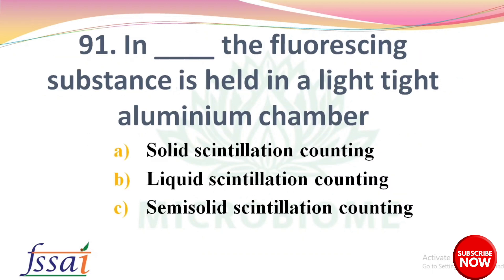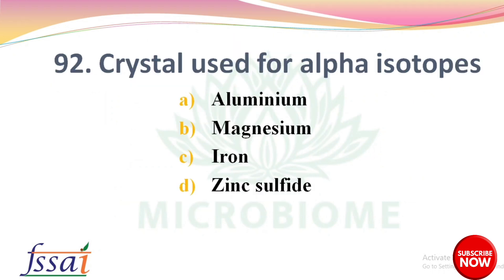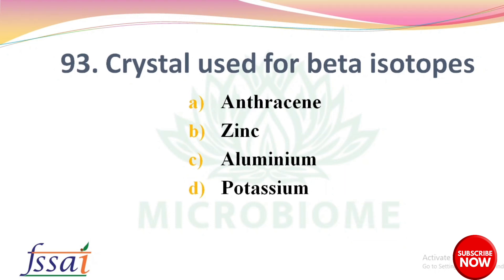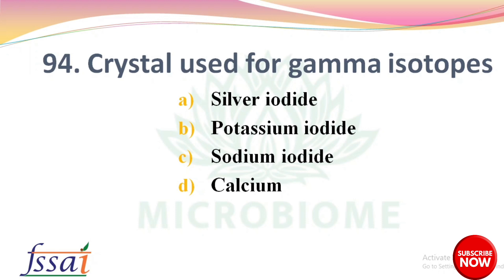In dash, the fluorescent substance is held in a light-tight aluminum chamber — options: solid scintillation counting, liquid scintillation counting, semi-solid scintillation counting. The right answer: option A, solid scintillation counting. Next: crystal used for alpha isotopes — options: aluminium, magnesium, zinc sulfide. The right answer: option D, zinc sulfide. Next: crystal used for beta isotopes — the right answer: option A, anthracene. Next: crystal used for gamma isotopes — options: silver iodide, potassium iodide, sodium iodide, calcium. The right answer: option C, sodium iodide.